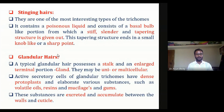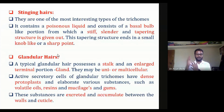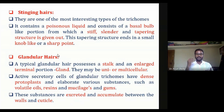Glandular hair is similar to stinging hair but contains chemical substances that are not poisonous. These glandular trichomes contain volatile oils, resins, miscellaneous substances, gums, or latex. These substances do not cause harm on contact but can be used for pharmaceutical or medicinal properties after scientific validation. In stinging hair, the biochemicals released are poisonous, but in glandular hair, the released substances are not poisonous.